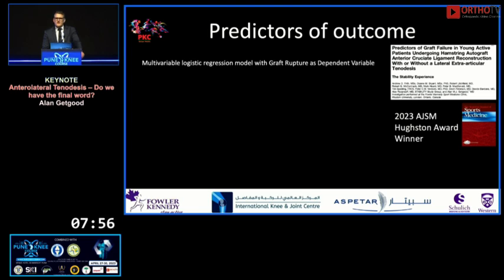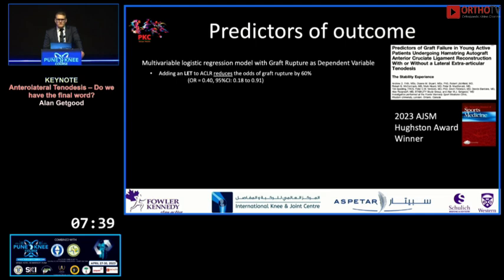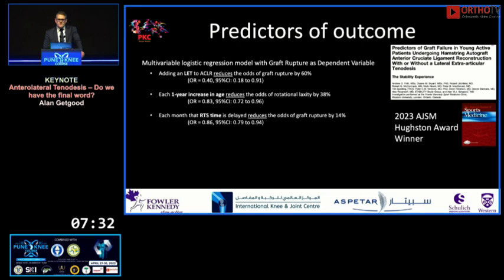We examined predictors of outcome using a multivariable logistic regression model — this paper recently received the Houston Award from AJSM. We found the LET reduces odds of graft rupture by 60%. Age is important: each one-year increase in age reduces the odds of rotatory laxity. Return to sport timing also matters — delaying return to sport reduces the odds of graft rupture.